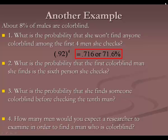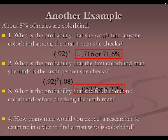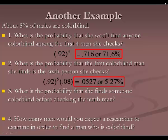Question 2: what's the probability that the first colorblind man she finds is the sixth person she checks? That means five men were not colorblind and then the sixth one is. So 0.92 to the fifth times 0.08 gives 0.0527, or 5.27%.